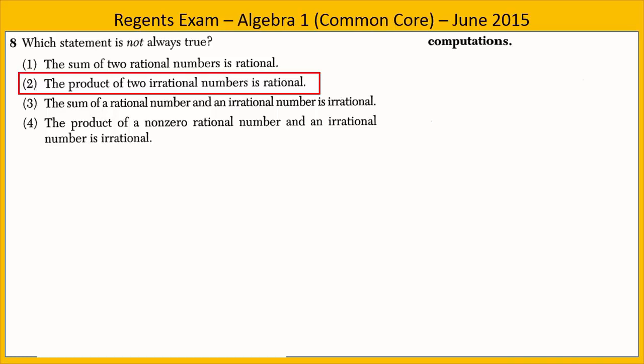Consider this example. An irrational number times an irrational number can be rational. The square root of 18 times the square root of 2 — both irrational numbers — gives us the square root of 36, which is 6, a rational number.